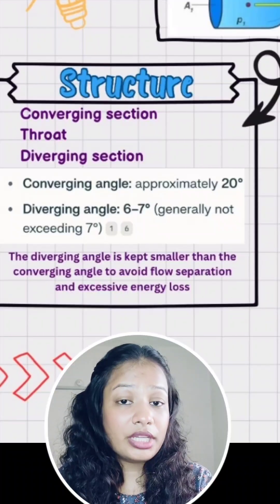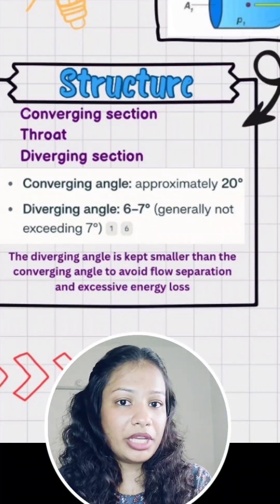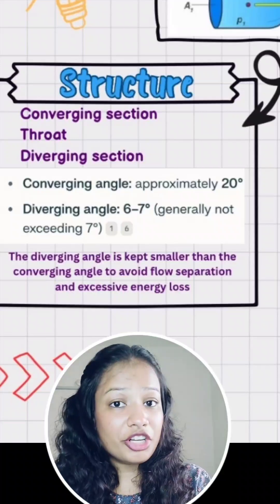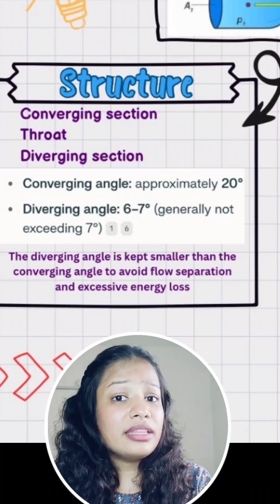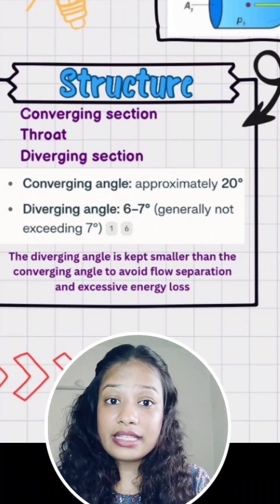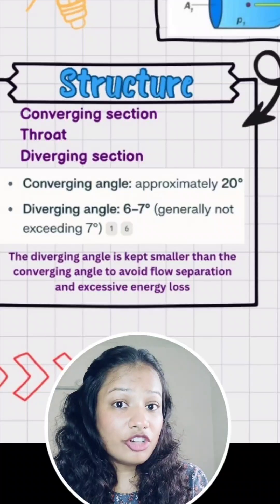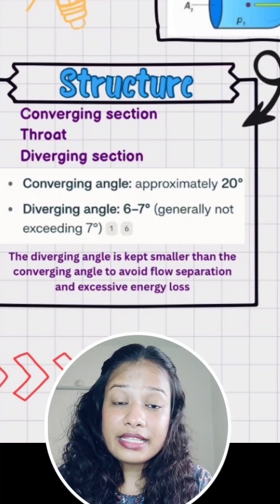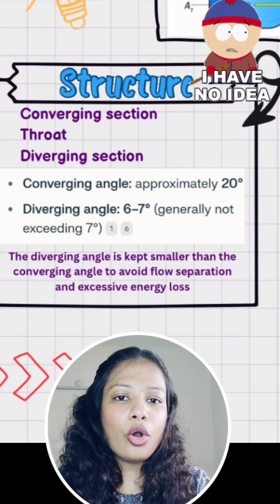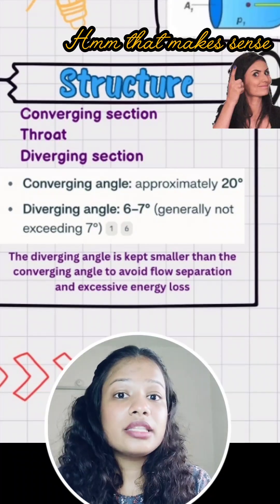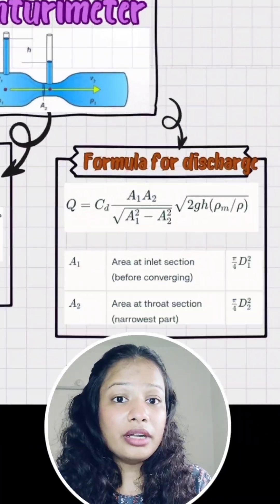Number 2: an important question is related to the structure of the Venturi Meter. It is divided into 3 parts: the Converging Part, the Throat, and the Diverging Part. The converging length is very short compared to the diverging length, and the angle of divergence is lesser than the angle of convergence. Why? Because this minimizes the loss of energy due to flow separation.